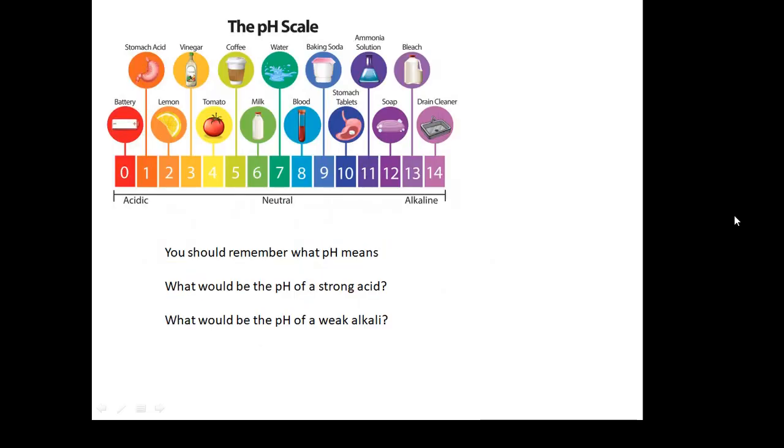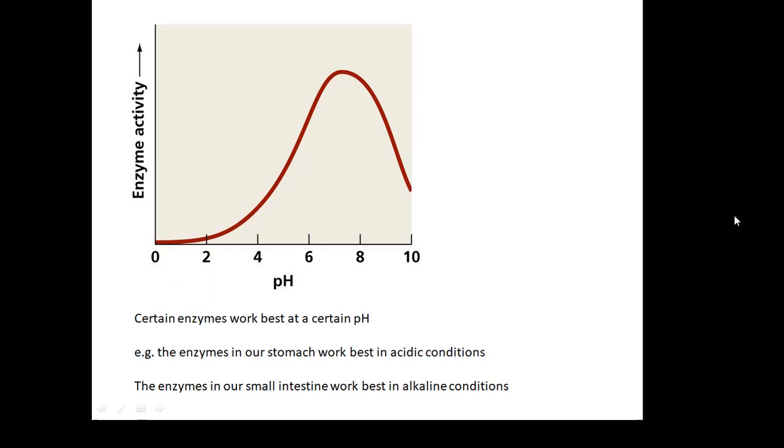You should remember what pH is, very, very strong acids, around 1, up to very, very strong alkalines, about 14. What would be the pH of a strong acid? I've just told you. What would be the pH of a weak alkali? Well, there'd be about 8 or 9. pH 7 is neutral. Certain enzymes work best at a certain pH. It depends on the enzyme. The enzymes in your stomach work best in acidic conditions, which is why we have stomach acid, amongst other reasons. It also helps to kill germs that we ingest. But the enzymes in your stomach work best in acidic conditions. The enzymes in your intestine work best in alkaline conditions. It depends on the enzyme, what pH they work best at.